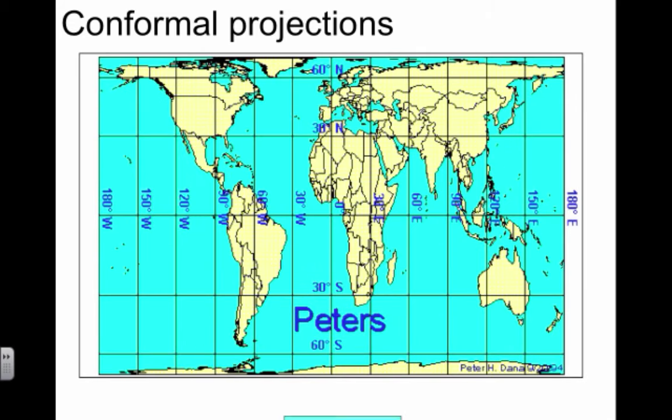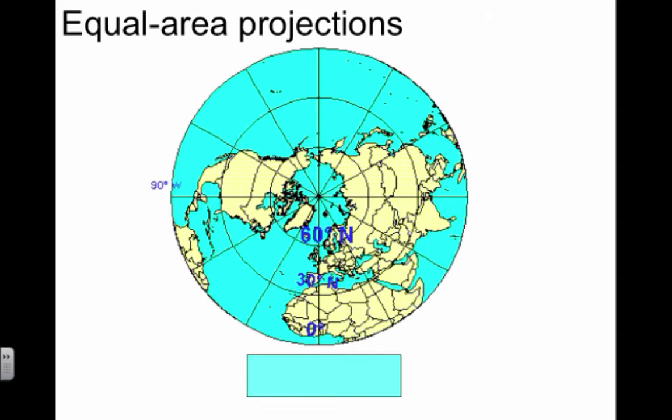This is the Peters projection, sometimes called the Gall-Peters projection. In this case, it's almost in reverse. You can see the equator, and there's distortion at the poles and here as well. This projection was designed to maintain equal area, so it's not just conformal but also sometimes considered an equal area projection.